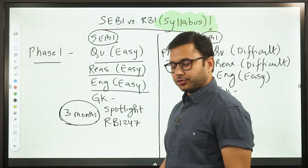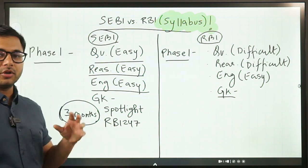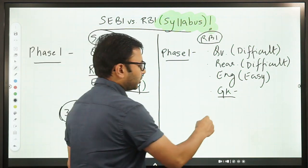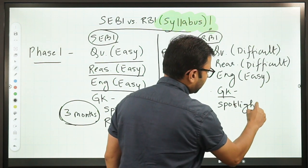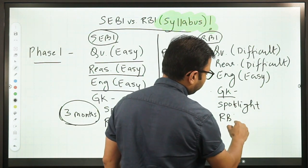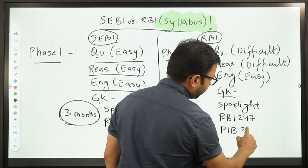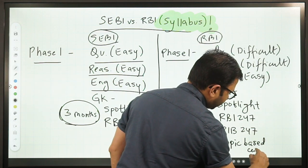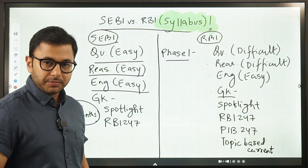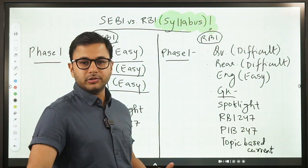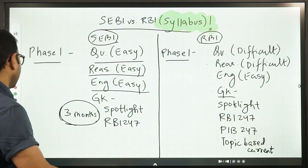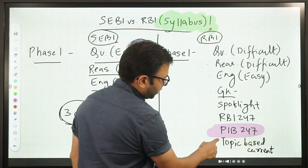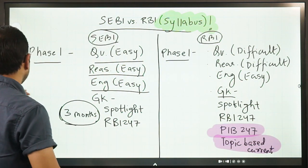Lastly, let's come to GK or general awareness. In general awareness, you have to cover a lot more in RBI because the number of questions increase from 20 to suddenly 80 in RBI. And therefore, the depth and breadth of coverage also increases. You have to cover Spotlight, you have to cover RBI 247, you have to cover additionally PIB 247, and you also have to cover topic-based current affairs. When I say topic-based current affairs, I mean economic survey, union budget, government schemes, indices, reports, annual surveys, committees. Let me highlight these areas for you. So this is additional: PIB 247, topic-based current affairs. Spotlight and RBI 247 remain the same.